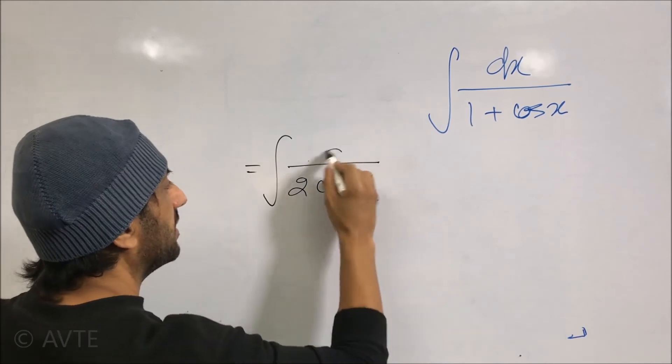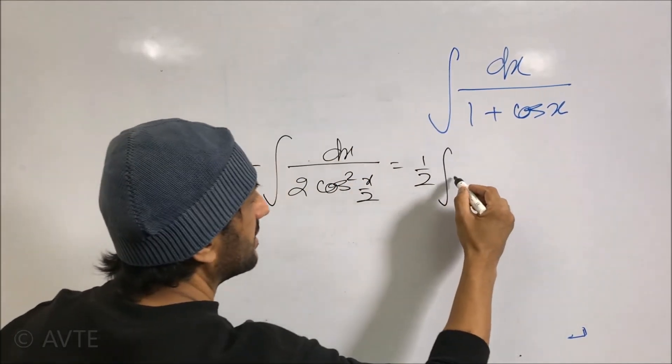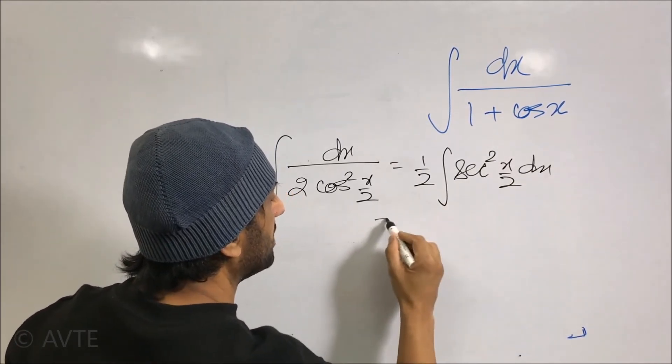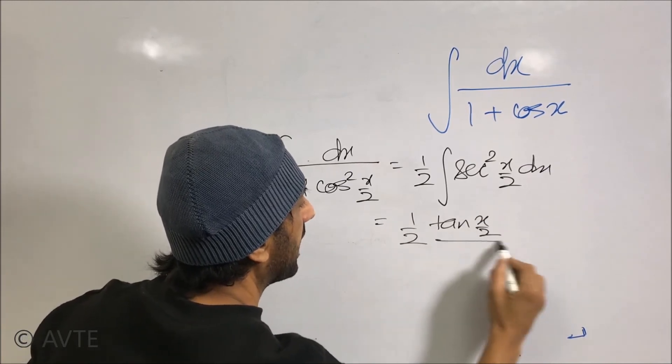And then we can take cos² to the numerator, so it will be sec²(x/2) dx. And the integration will be (1/2)tan(x/2), and the derivative of the angle will be 1/2.